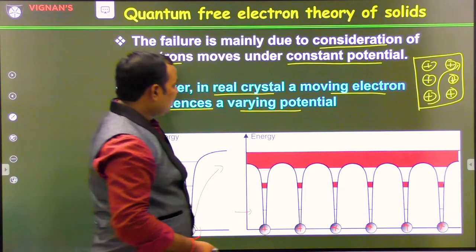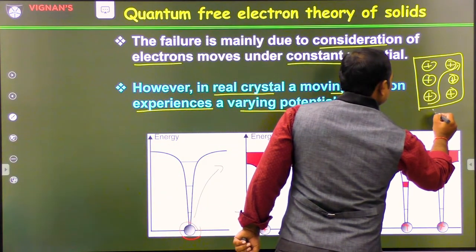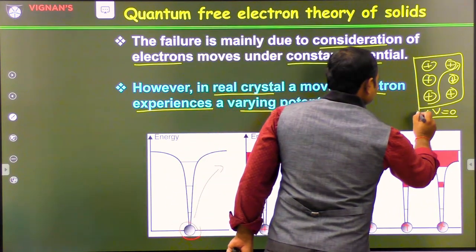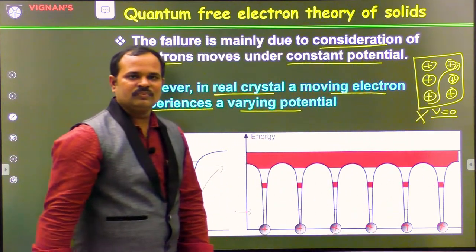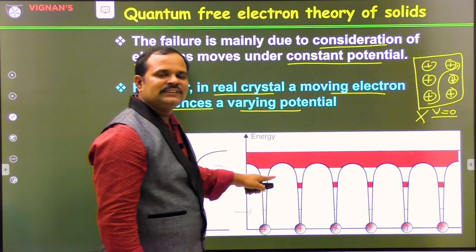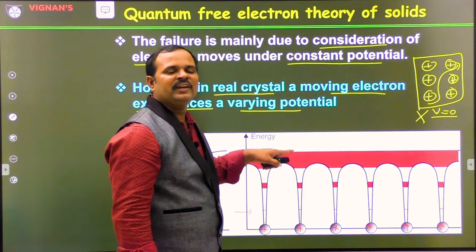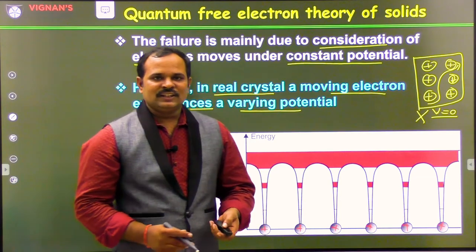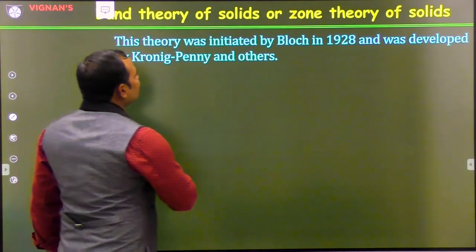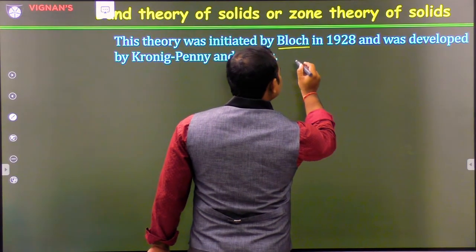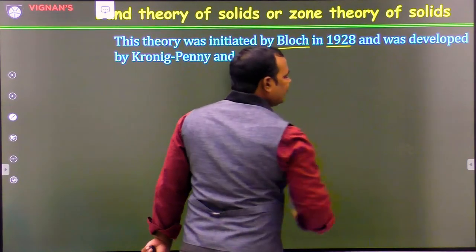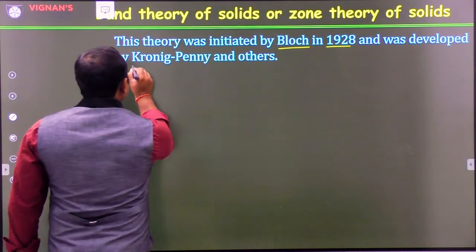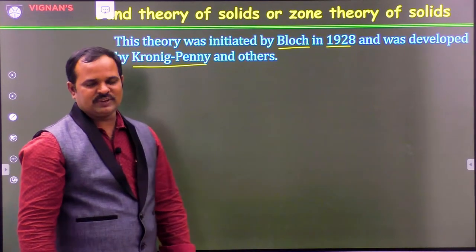However, Sommerfeld considered that during all these motions the potential is constant and equal to zero, but that is not correct. So in the zone theory, this was corrected by Bloch and Kronig-Penney and others. The band theory of solids was initiated by Bloch, a scientist, in 1928, and further this theory was developed by Kronig and Penney and others in subsequent time.